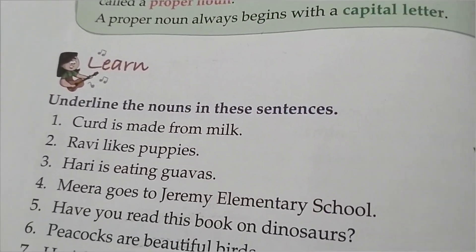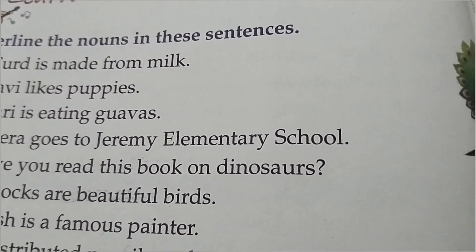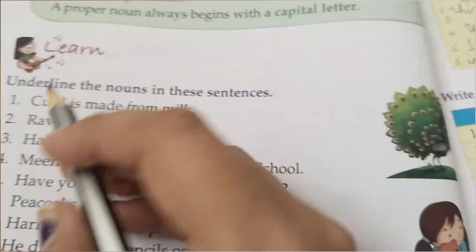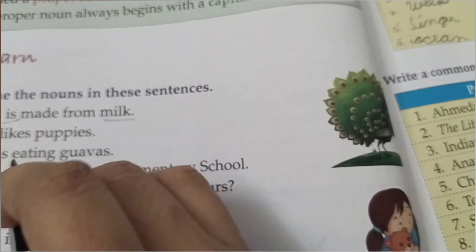Underline the nouns in these sentences. Curd is made from milk. Curd and milk — both are naming words.